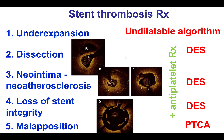In summary, stent thrombosis can be a catastrophic event. The key to successful treatment is to understand the mechanism. If it is under-expansion, the stent is expanded using various techniques. If the mechanism is dissection, neo-intima, or loss of stent integrity, then typically more stents are placed. If the mechanism is malapposition, the stent is ballooned to expand it. Antiplatelet therapy is also optimized — acutely with more aggressive agents for large thrombus burden, and longer term with more potent P2Y12 inhibitors such as ticagrelor and prasugrel, often for more than 12 months.